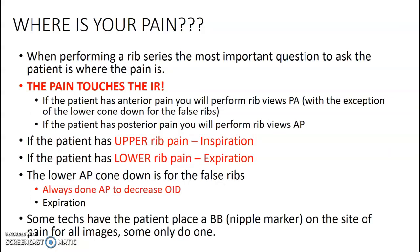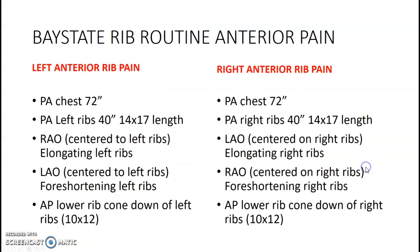The most important question to ask your patient coming in for rib x-rays is: where is your pain? When doing a rib series, the pain side is supposed to touch the image receptor. If they have anterior pain, the anterior part of their body touches the IR; posterior pain, the posterior touches. You also want to ask if it's upper or lower pain, because that determines your breathing instruction. Upper pain is inspiration — breathe in for upper, out for lower (expiration). We do a lower cone-down for the false ribs, done AP to decrease OID. Some techs or radiologists may prefer a BB nipple marker placed on the site of pain, directly on the skin, not on the gown.